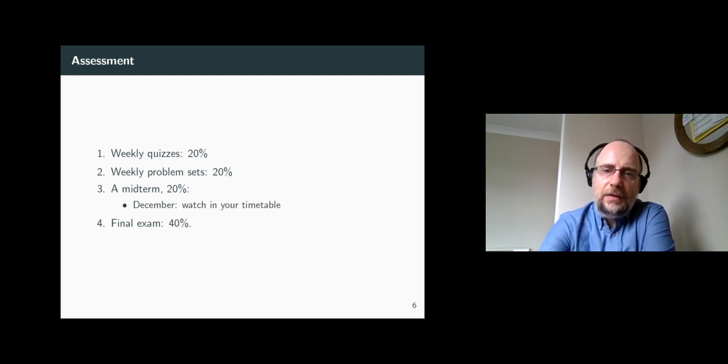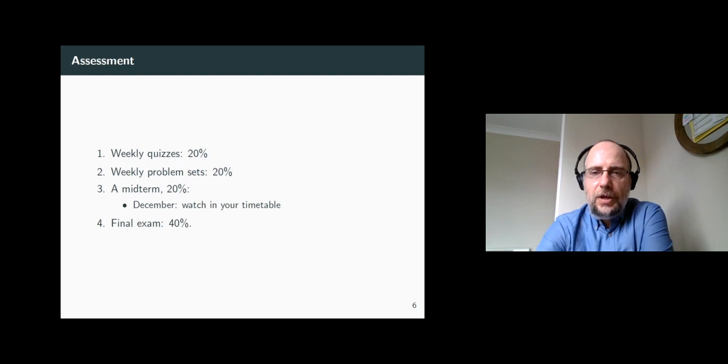Out of the planned ten homeworks for this term, only two will be marked. This will be the case next term as well. So you can expect about a 20-25% chance that a homework you submit will be marked. If it is marked, you will get a maximum of five percent on that particular homework. You will also not know in advance if the homework will be marked or not.